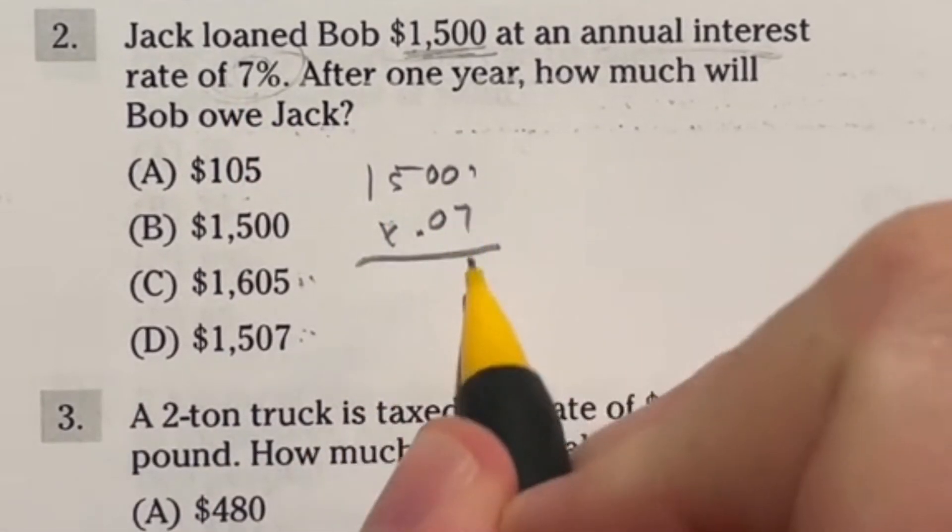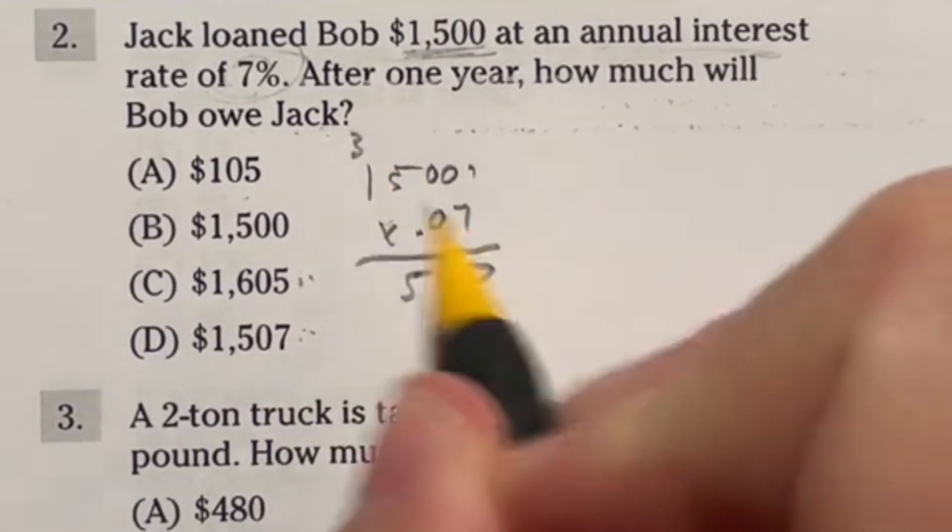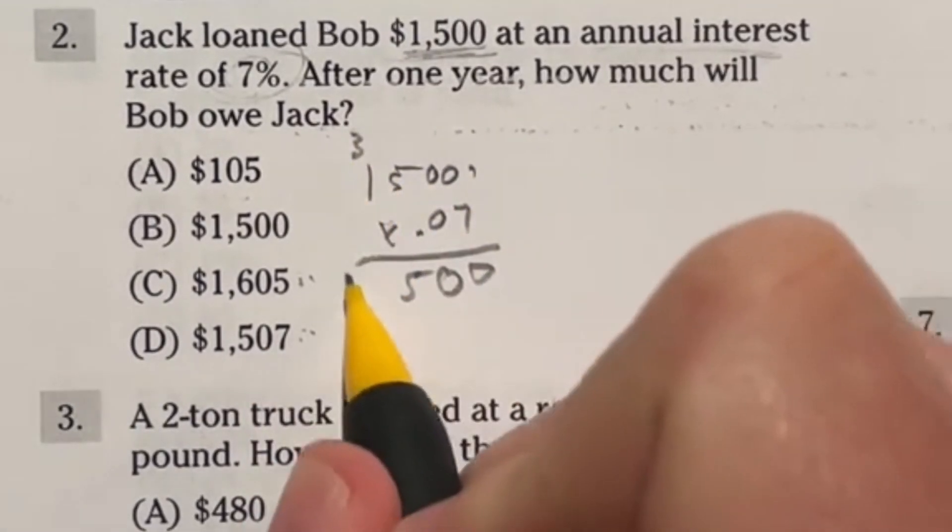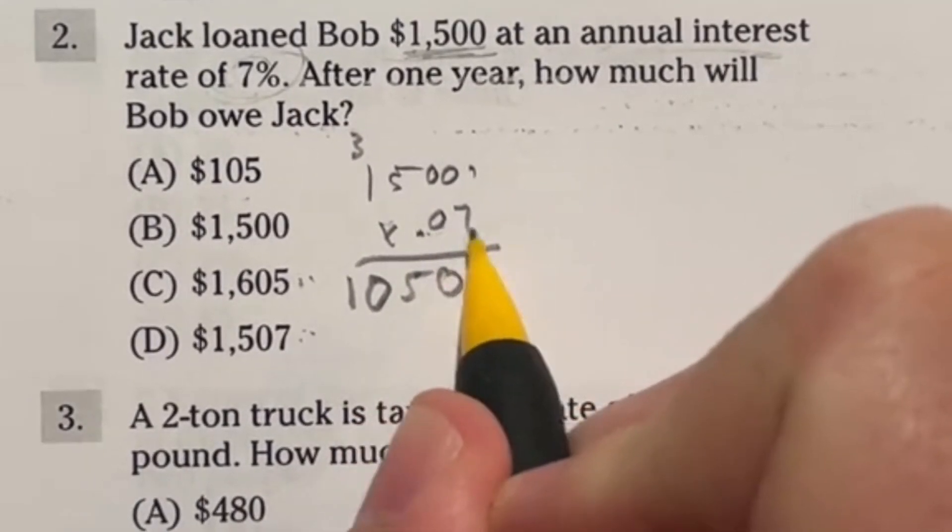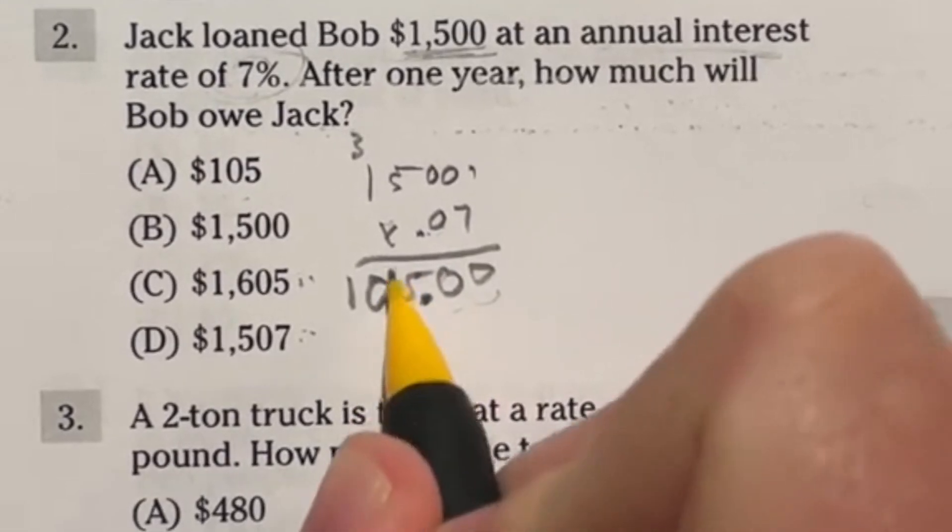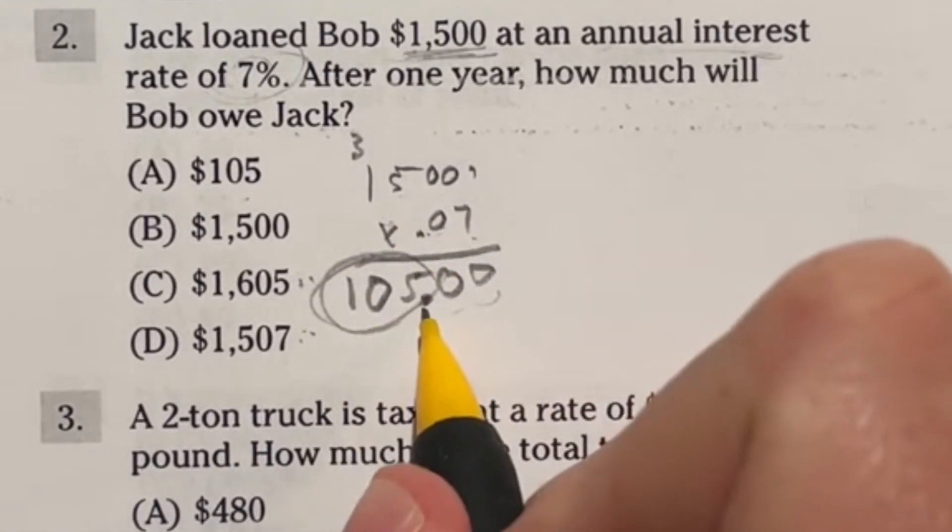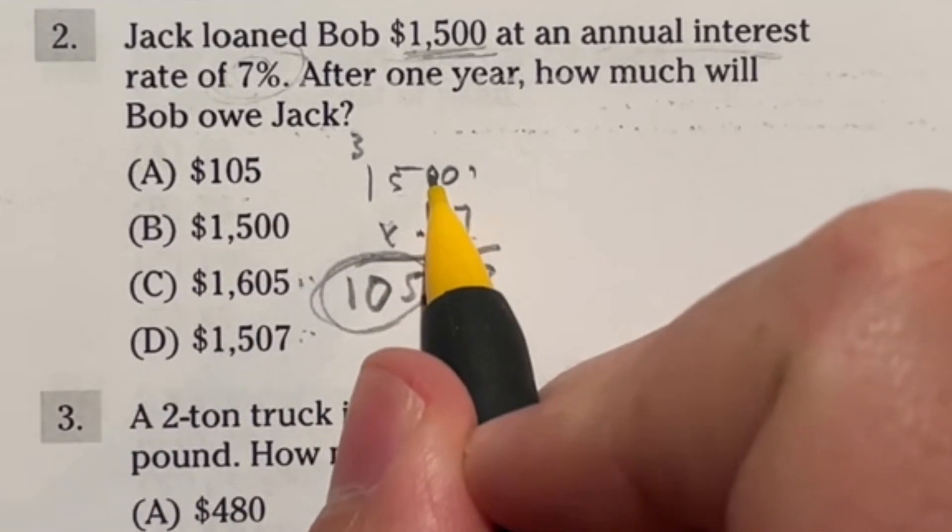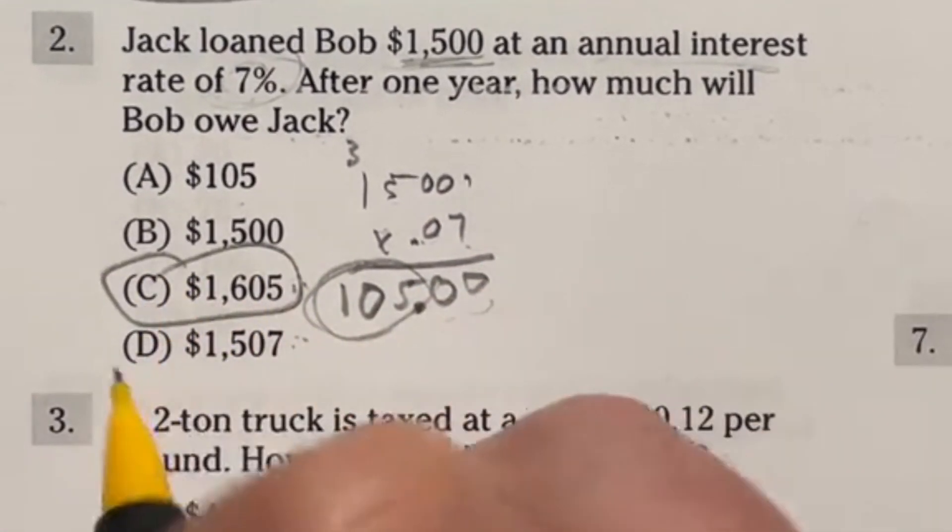We would be doing fifteen hundred times that point oh seven because you do the decimal form of the percent. Well seven times zero is zero. Seven times zero is zero. Seven times five is thirty five. Carry the three. Seven times one is seven. Plus three gives us ten. So now that we had the decimal point two places over we move it two over here and we get an answer of 105. So seven percent of fifteen hundred is 105. If we add that back to the fifteen hundred we do indeed get one thousand six hundred and five. Our answer here is C.